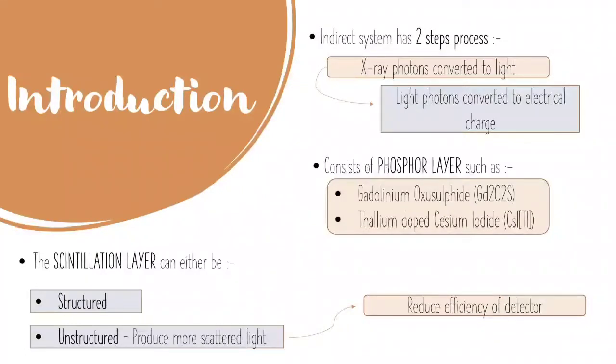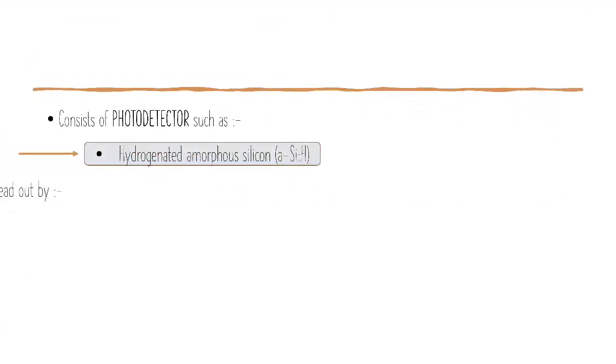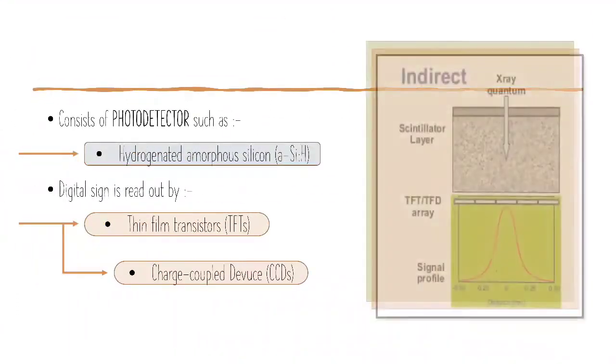This flat panel system consists of a phosphor layer, such as gadolinium oxosulfide and thallium-doped cesium iodide. The scintillation layer can either be structured or unstructured, but unstructured will produce more scattered light, hence reducing the efficiency of detection. It also consists of photodetectors such as hydrogenated amorphous silicon.